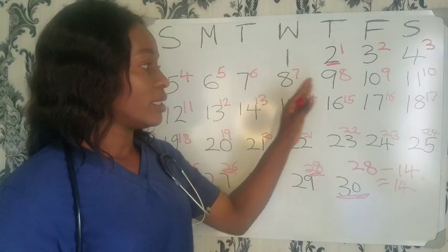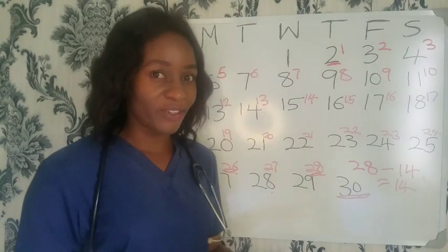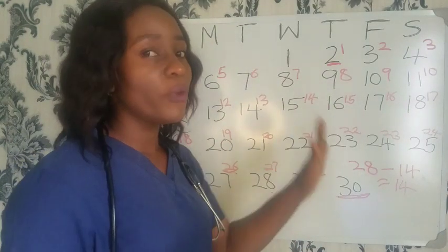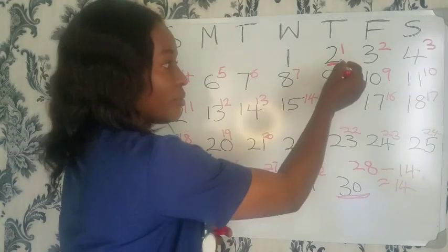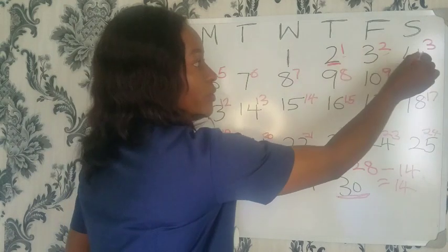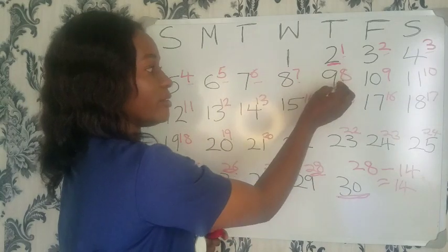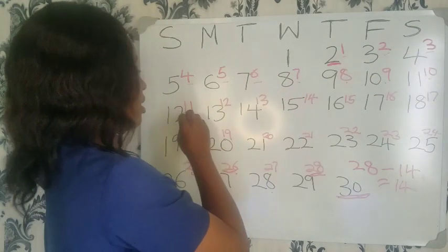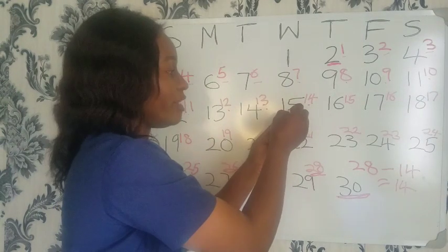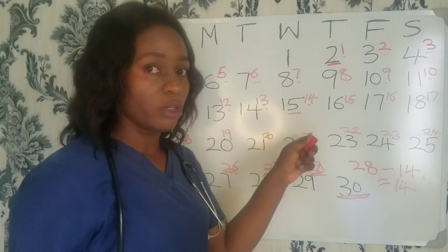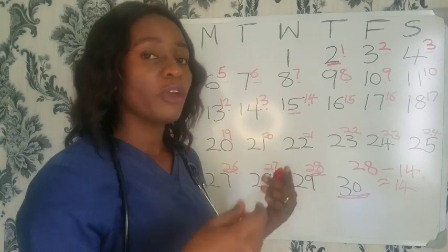When you subtract 14 from 28, you get 14. That means on day 14 of her cycle, this woman will ovulate. From the calendar, counting from day 1, the 14th day falls on the 15th of November — so that is her ovulation day.